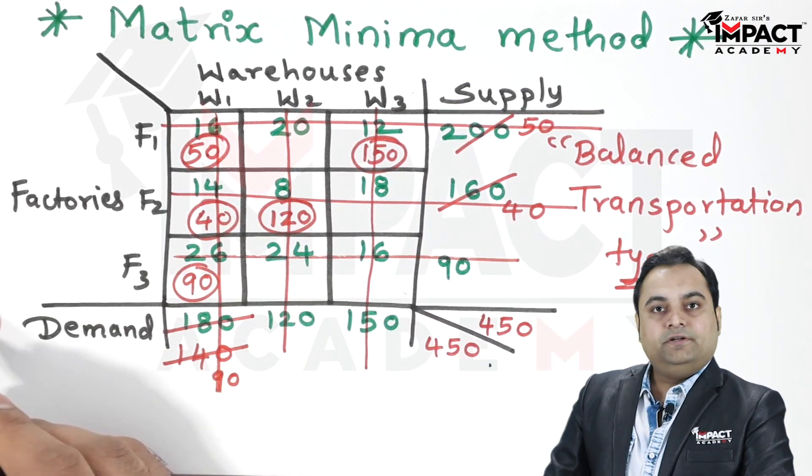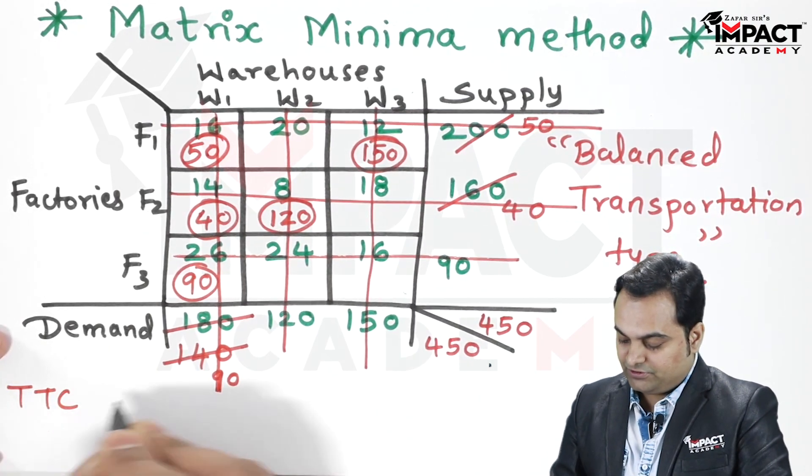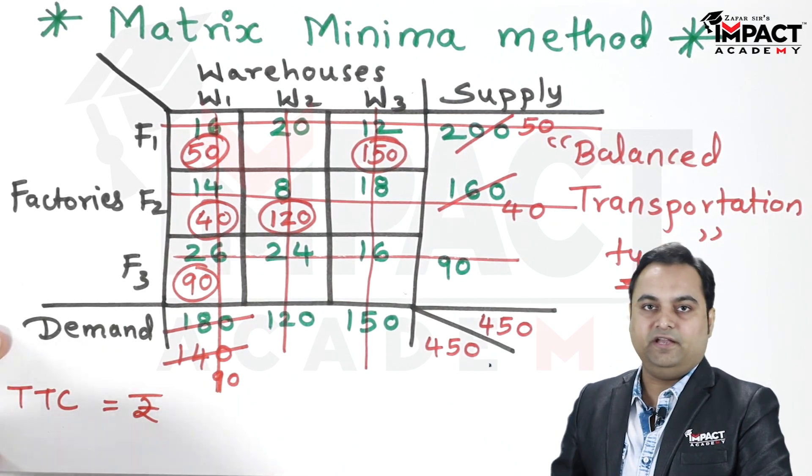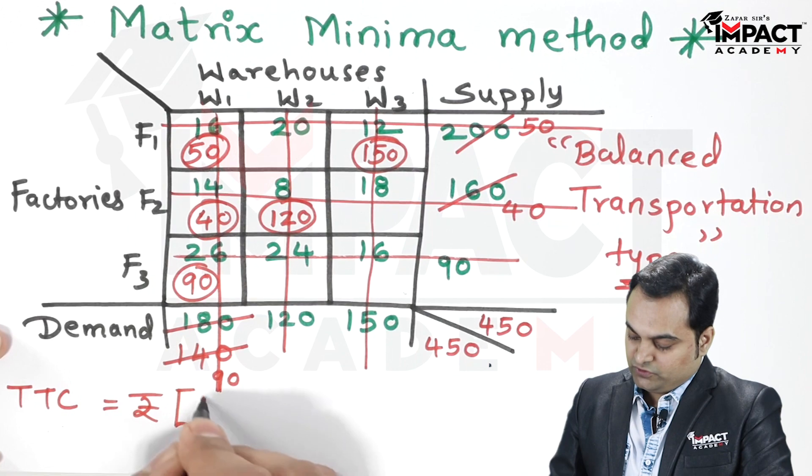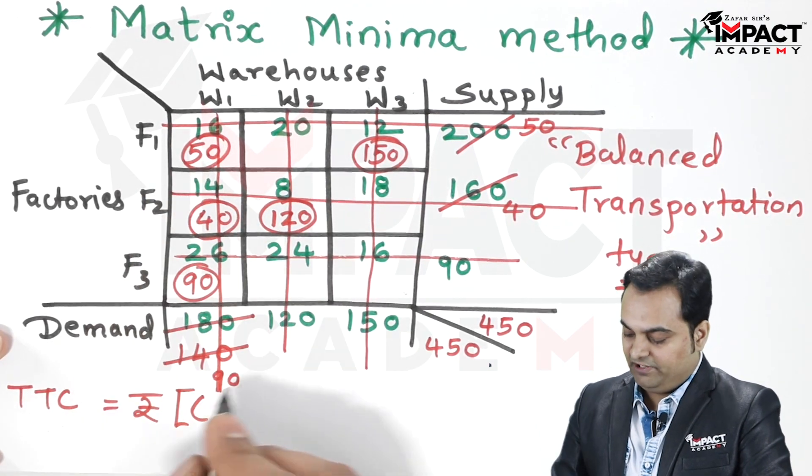Now to get the total cost, which is the total transportation cost, I'm assuming it to be in terms of rupees. It can be in any other currency as well. To get it, multiply the unit cost with the occupied value.